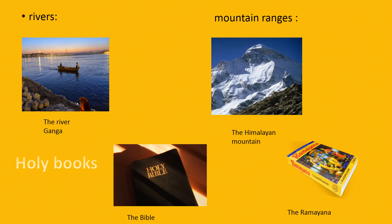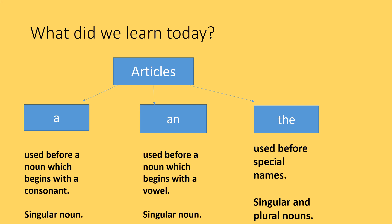So children, what did we learn today? We learnt that 'a', 'an', and 'the' are called articles. We use 'a' before a noun which begins with a consonant. We use 'an' before a noun which begins with a vowel. Both 'a' and 'an' are used with singular nouns. 'The' is used before special names, and 'the' can be used with both singular and plural nouns. With more examples and exercises, I am sure you will understand this topic better. Thank you.